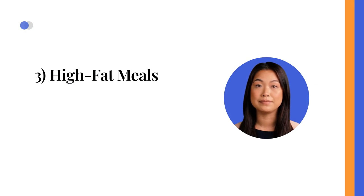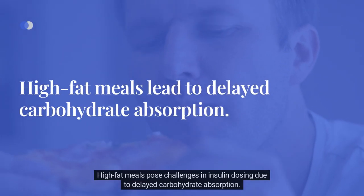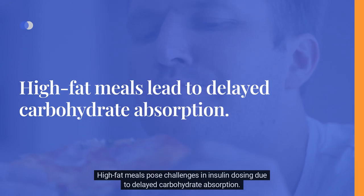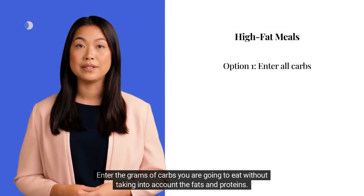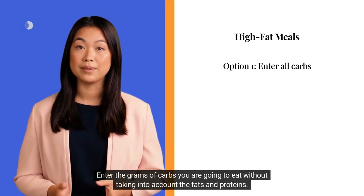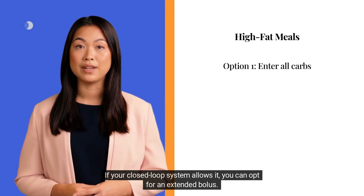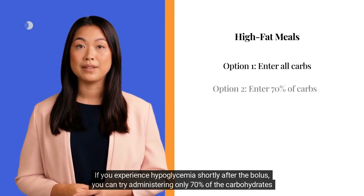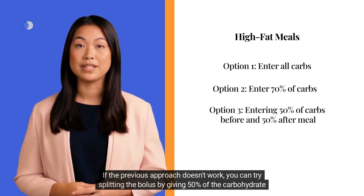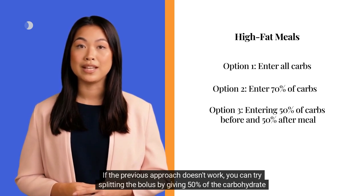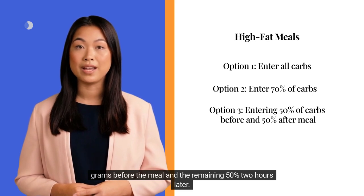3. High-fat meals. High-fat meals pose challenges in insulin dosing due to delayed carbohydrate absorption. Enter the grams of carbs you are going to eat without taking into account fats and proteins. If your closed-loop system allows it, you can opt for an extended bolus. If you experience hypoglycemia shortly after the bolus, try administering only 70% of the carbohydrates and allow the system to compensate. If that doesn't work, split the bolus by giving 50% before the meal and the remaining 50% two hours later.